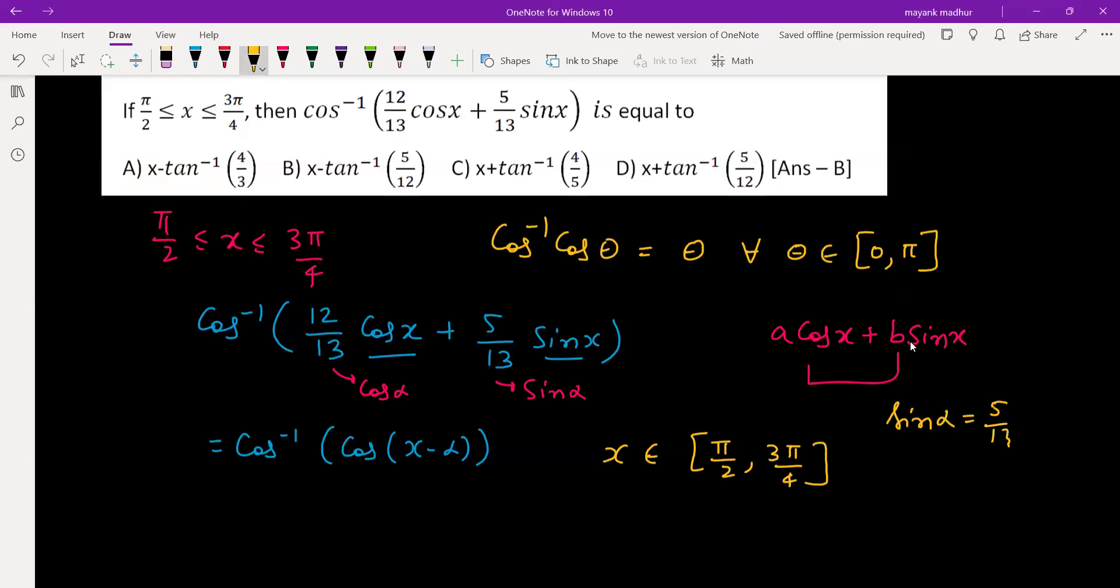So α is certainly a value in the interval of 0 to π/4, because the 45 degree value of sine is 1/√2, which is less than that. So x - α is a value lying in the interval of 0 to π, where we can write cos inverse cos θ is θ. So we can write it as x - α.